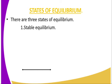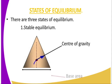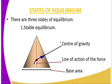We start with stable equilibrium. To understand stable equilibrium, we consider a shaped object in which we have to consider the position of the center of gravity and the base area. Those are two key things, along with the line of action of force through the base. So if this triangle is tilted at a given angle, as long as the line of action remains within the base area, this will always be stable.